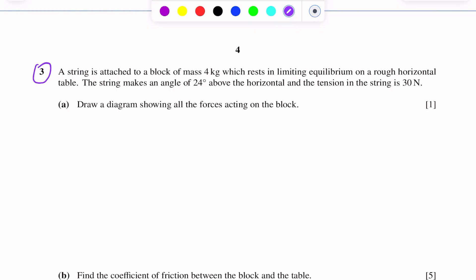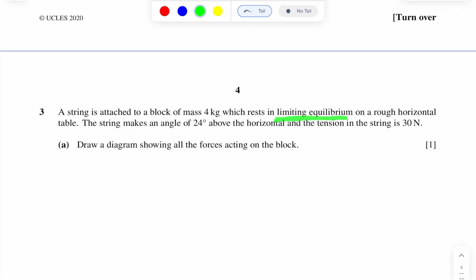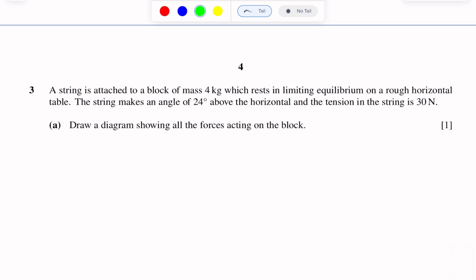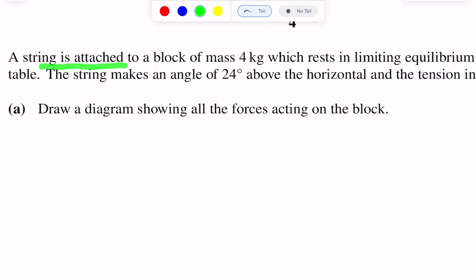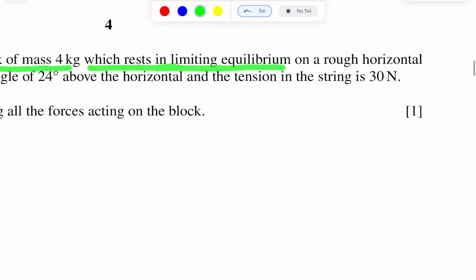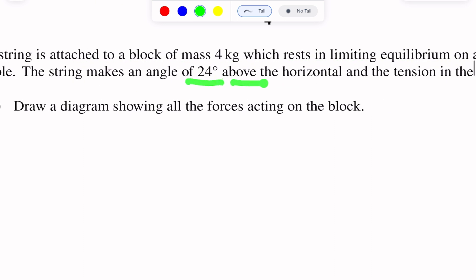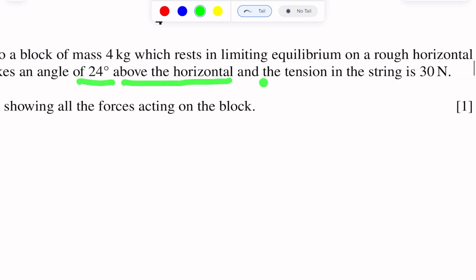Question number 3. This question is of limiting equilibrium. A string is attached to a block of mass 4 kg which rests in limiting equilibrium on a rough horizontal table. The string makes an angle of 24 degrees above the horizontal and the tension in the string is 30 Newton.